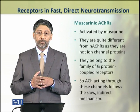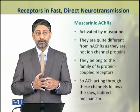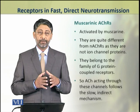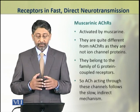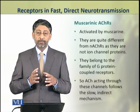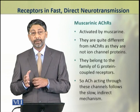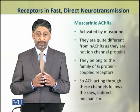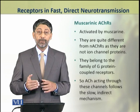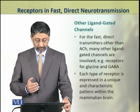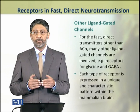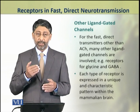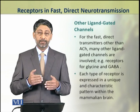The second type of acetylcholine receptors, namely muscarinic acetylcholine receptors, are activated by muscarine. They are quite different from nicotinic receptors because they are not ion channel proteins — they belong to a family of G protein-coupled receptors. This is why when acetylcholine acts through these receptors, slow indirect neurotransmission is produced, unlike the ligand-gated ion channels which are involved in fast direct neurotransmission.